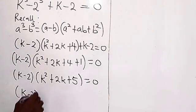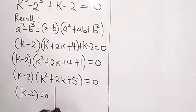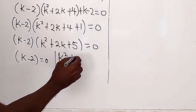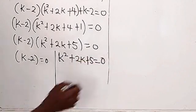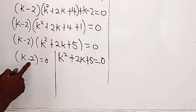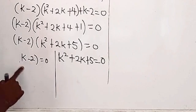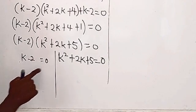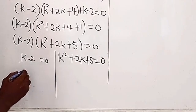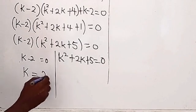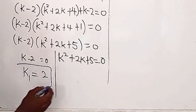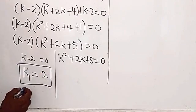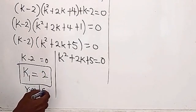So we have k minus 2 times k squared plus 2k plus 5 equals 0, because 4 plus 1 gives us 5. So we have k minus 2 equals 0, or k squared plus 2k plus 5 equals 0. When k minus 2 equals 0, we get k equals 2. That is k1, which is our real solution.